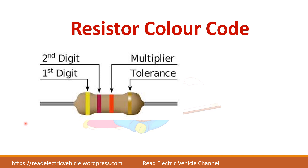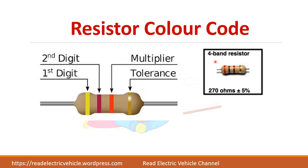Let us see the resistor color coding. You keep the resistor such that the tolerance band — which will be either silver or gold — is placed at the right side, and the remaining bands are on the left side. In this case, the first two bands indicate the numerical value and the third band gives the multiplier value — that is, whether you multiply by 1, 10, or 100 to get the original resistor value. There will also be a gap between the three value bands and the tolerance band.